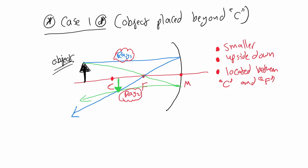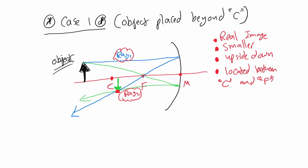This image is also a real image. A real image means we are able to form it on a screen or surface — for example, a translucent piece of paper placed at the image location will collect the image. A virtual image, however, cannot be collected on a surface; it is simply viewed by the brain as if light is coming in a straight line.